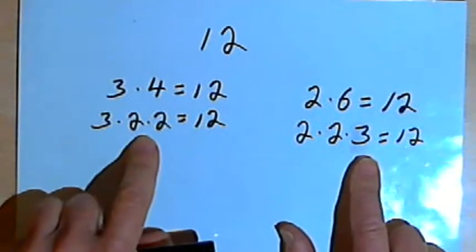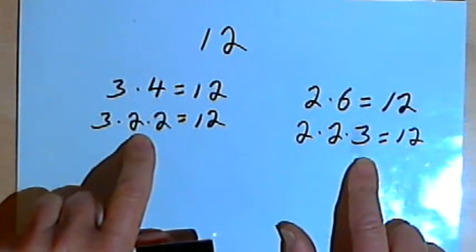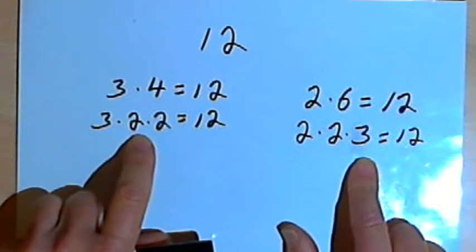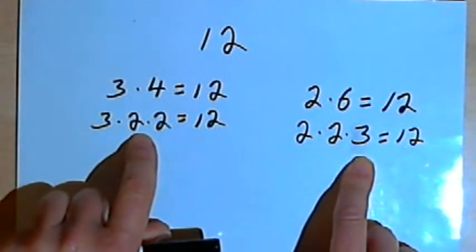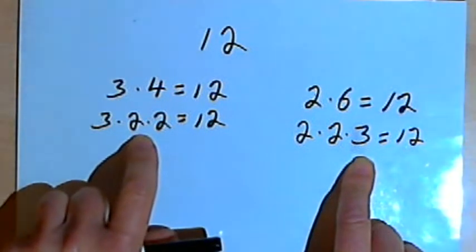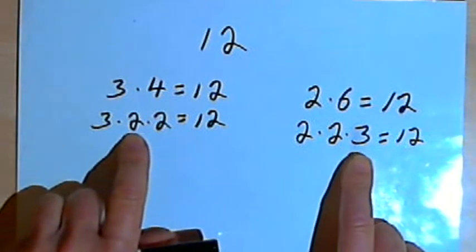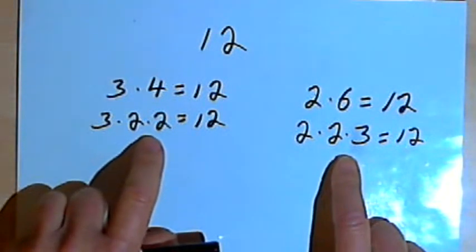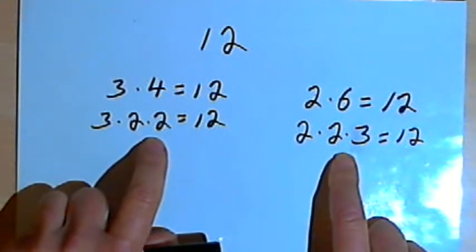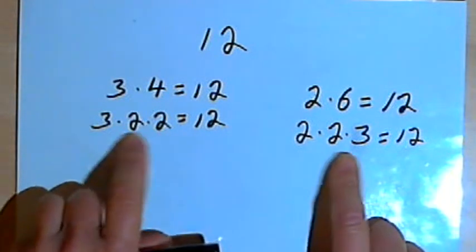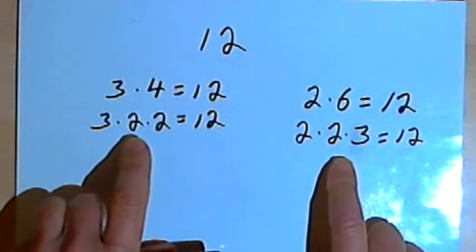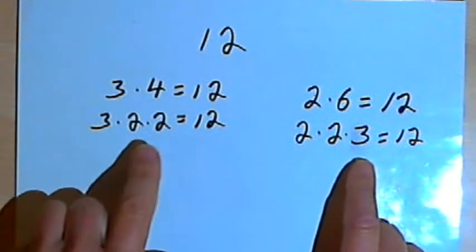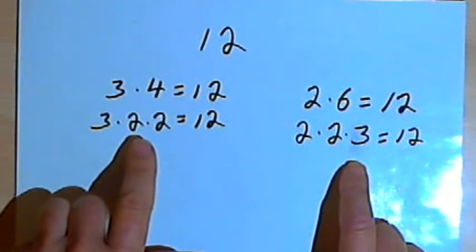So both of these prime factorizations are really the same thing. Now there's a basic rule in mathematics, in arithmetic, that says that any number, no matter what number you pick, will only have one unique prime factorization. So when we find the prime factorization of a number, that's what we're doing. We're finding the one and only way to break the number down into its prime factors.